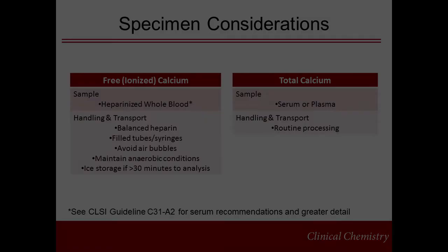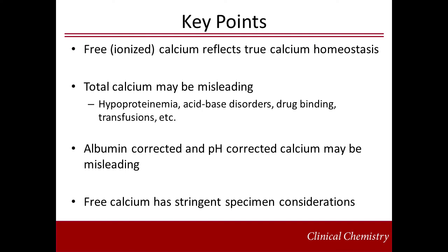The key points to remember from this short presentation are: free calcium is the most accurate laboratory test to assess the true calcium status of a patient; it is the biologically active pool which is hormonally regulated. Total calcium concentrations can be misleading in patients with abnormal protein concentrations, acid-base disorders, or in patients receiving citrated blood products, among other causes. Correction formulas have significant limitations that need to be considered before being utilized. Finally, if free calcium measurement is being used, it is essential to pay attention to the special collection and handling requirements needed for free calcium measurement.